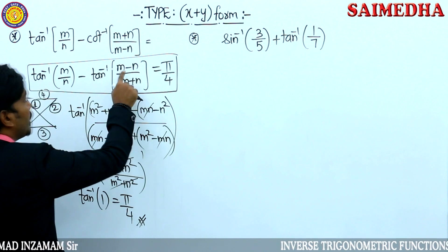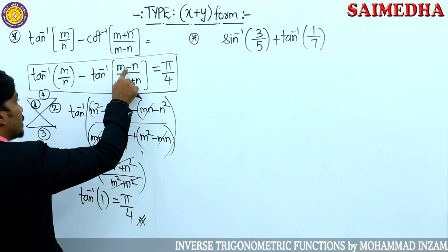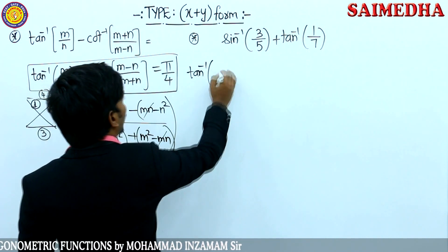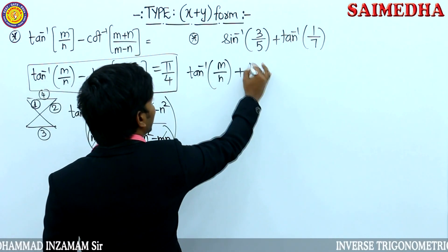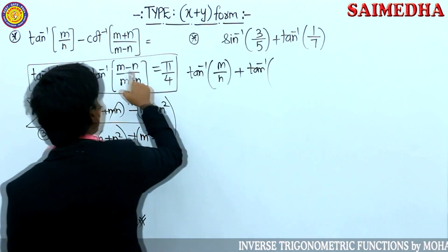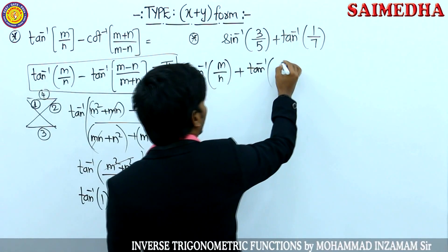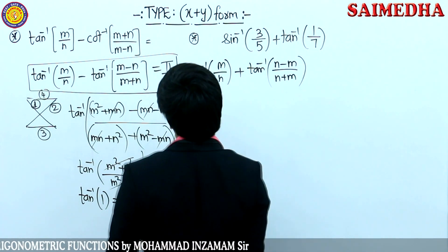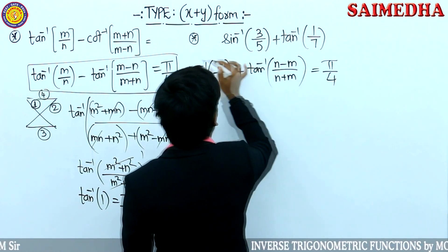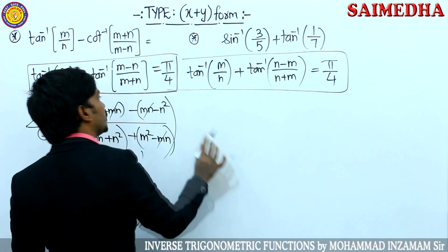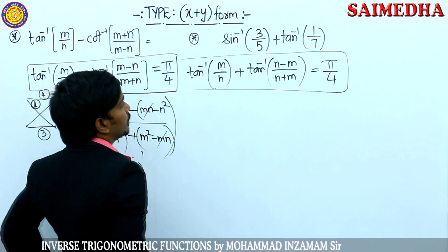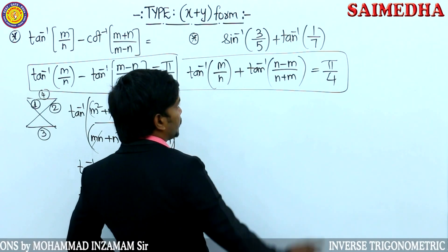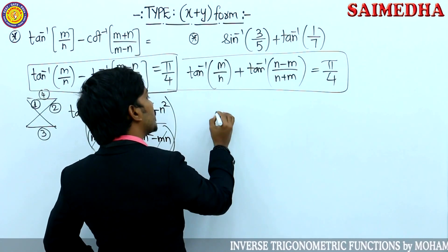Now converting sin inverse to tan inverse: in the form of sin inverse of x plus tan inverse, terms with m/n and n squared plus m squared appear. After cancellations everything reduces to tan inverse of x plus tan inverse of y. And this sin inverse converts into tan inverse.